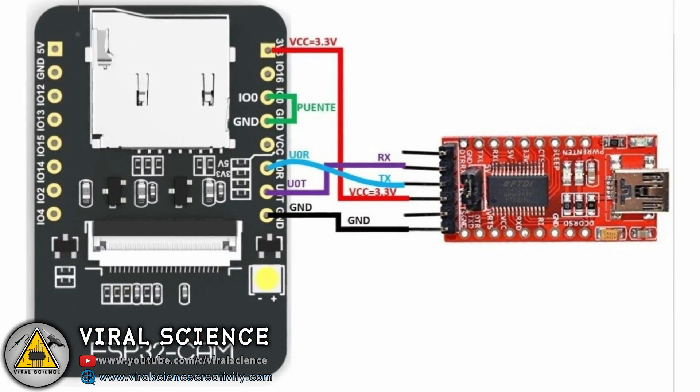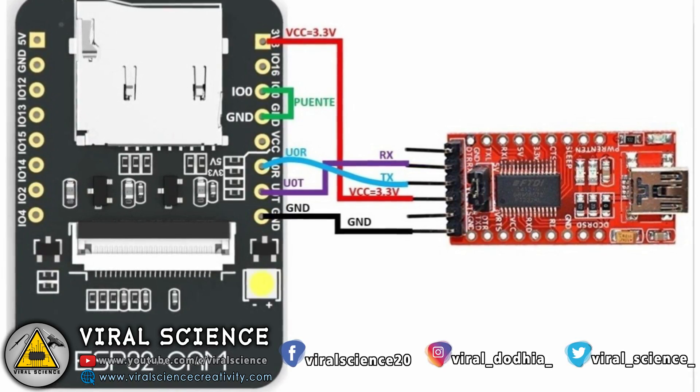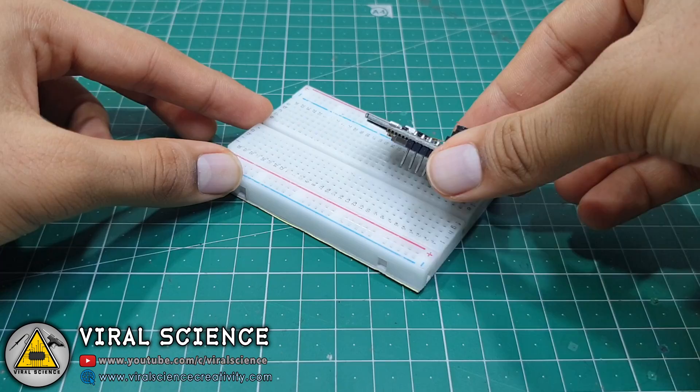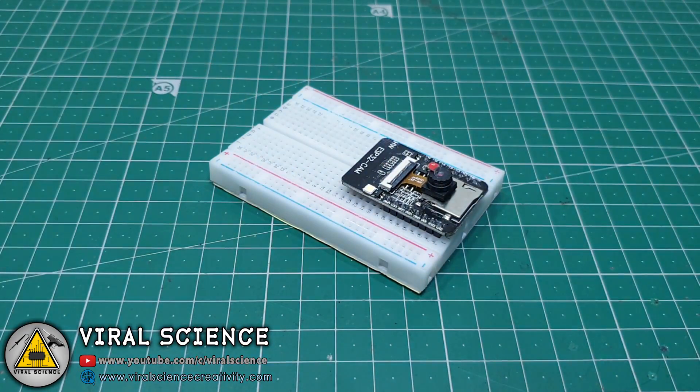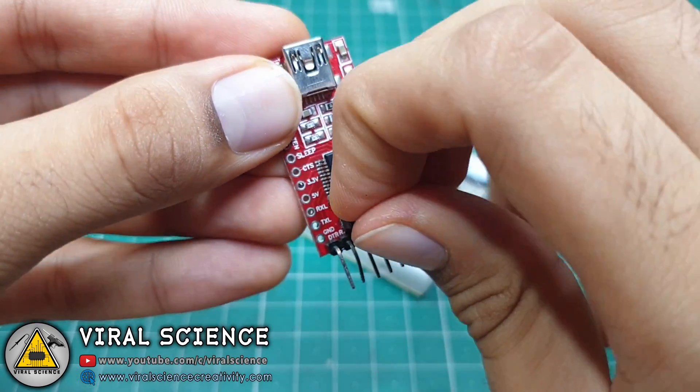So to program our ESP32 board, you will need to do these connections and connect it with the computer. I am using 3V power from this module. If you get some brown out errors, you can shift to 5V.